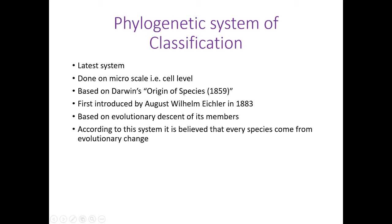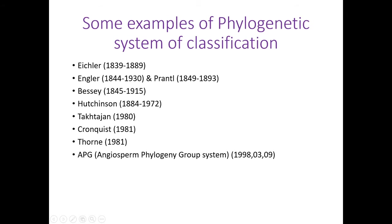These systems were first introduced by Auguste William Eichler in 1883. All the systems are based on the evolutionary descent of their members. According to the system, it is believed that every species comes from evolutionary changes. These are some characteristic features of all phylogenetic classification systems.